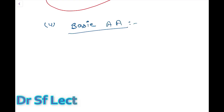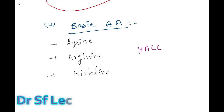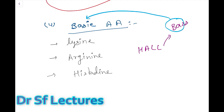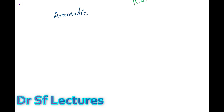Group number four is basic amino acids. The members are: lysine, arginine, and histidine. To remember these, think of playing a song in a hall — the sound has a bass effect from the speaker. 'BASS' is basic: H for histidine, A for arginine, and L for lysine. Bass sound in the hall!